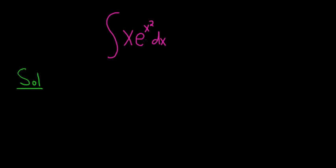So when you see a problem like this, the e to the x squared sticks out. So if you let u be x squared, something nice happens.